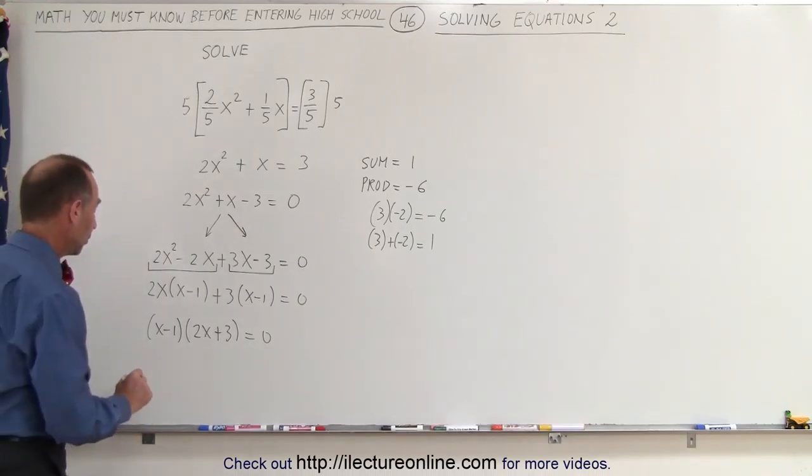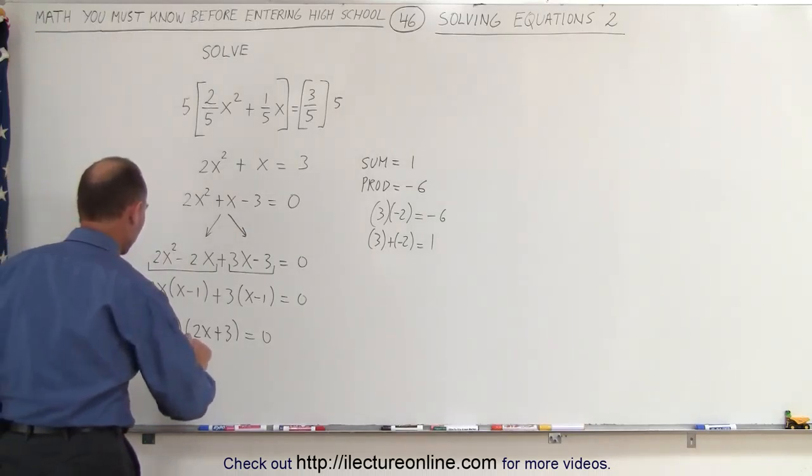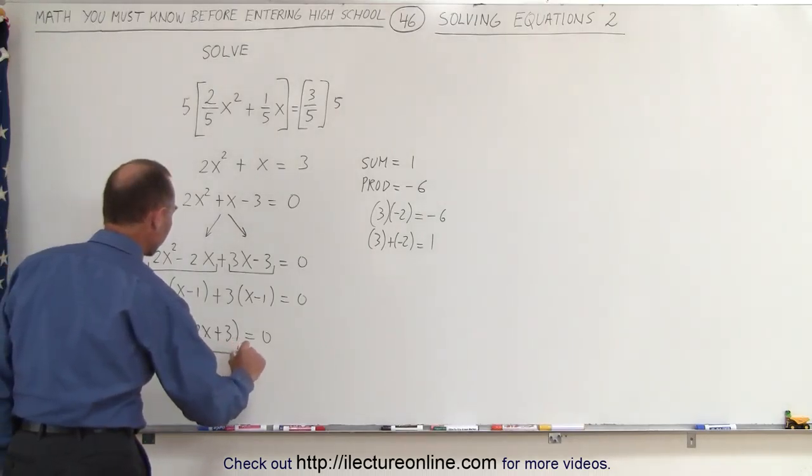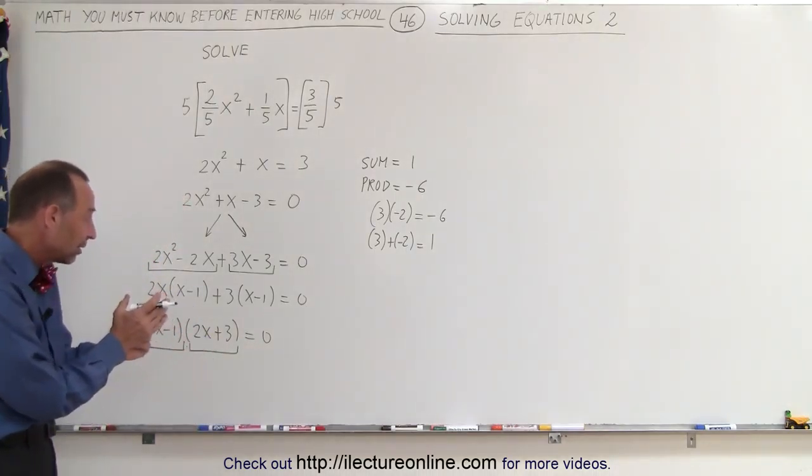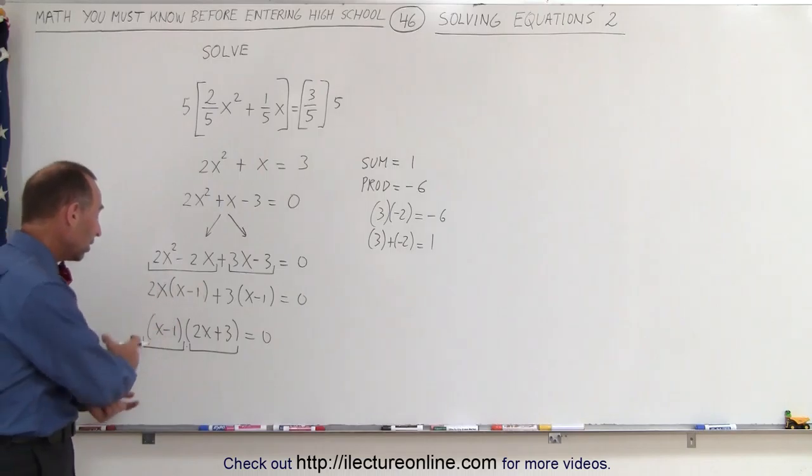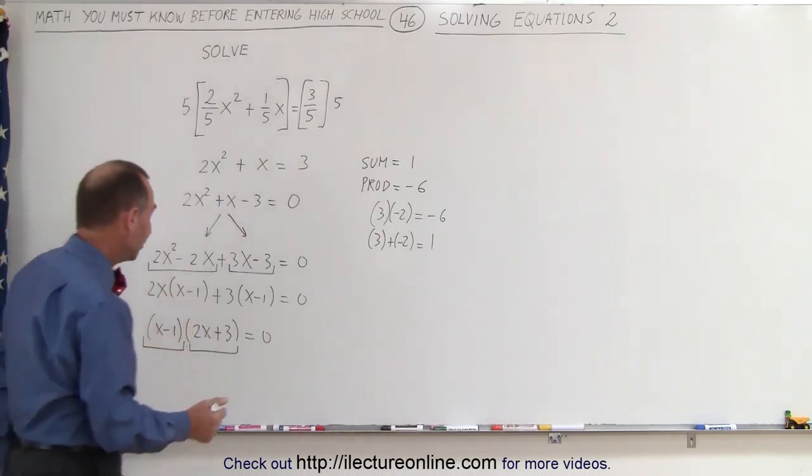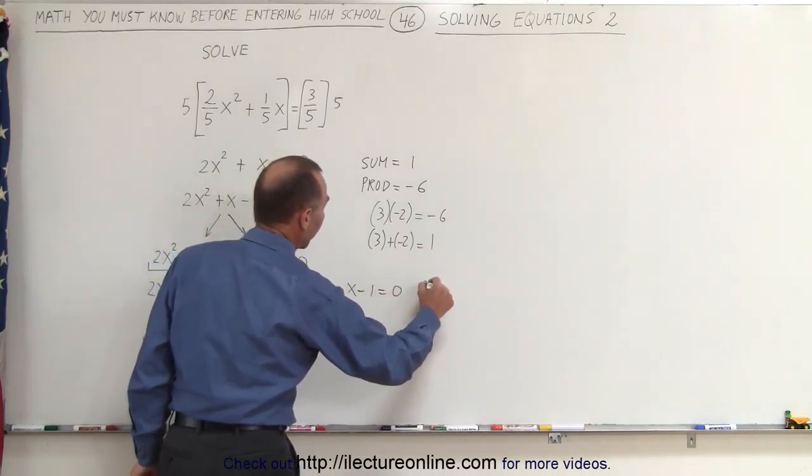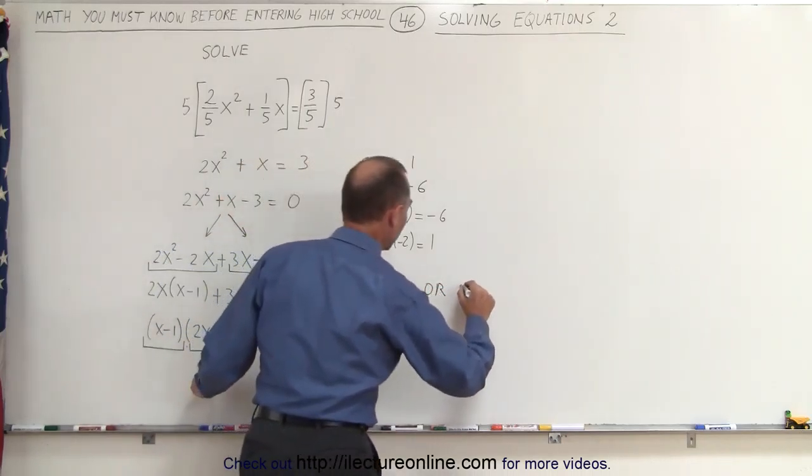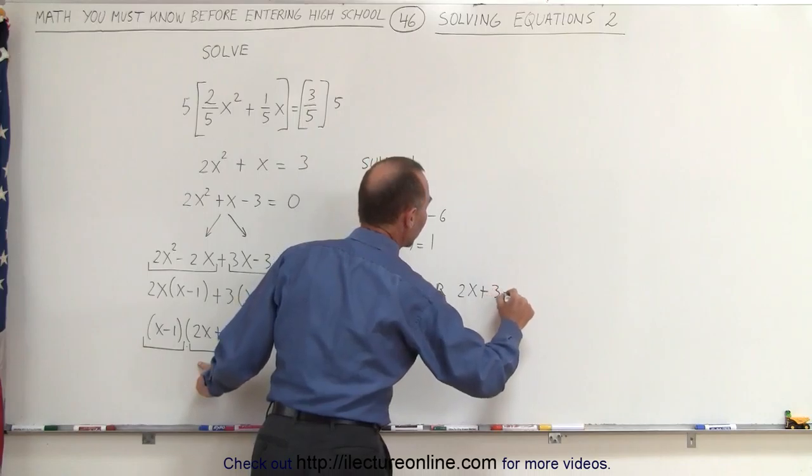Now the last part is we realize that we have a binomial multiplied times a binomial, and we get 0. So whenever we multiply two things together and we get 0, that means either one is 0 or the other is 0, which means that either x - 1 = 0 or the quantity 2x + 3 = 0.